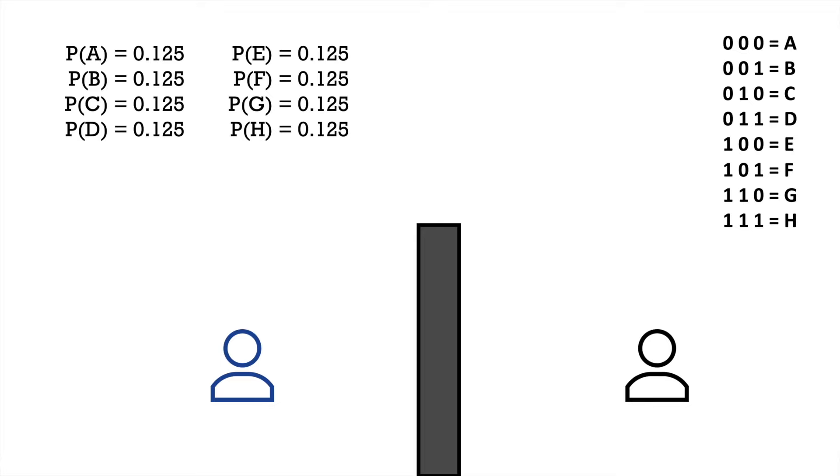So, after observing which team won the tournament, we can send a 3-bit number to the other person and they will know exactly what the outcome was. Therefore, this distribution has an entropy of 3 bits.